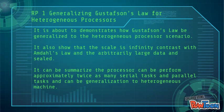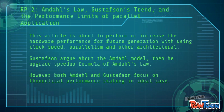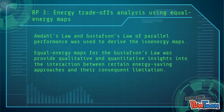This article is about increasing hardware performance for future generations using clock speed, parallelism, and other architectural approaches. Gustafson argues about the Amdahl model, then upgrades the speed-up formula of Amdahl's Law. However, both Amdahl and Gustafson focus on theoretical performance scaling in ideal cases. Amdahl's Law and Gustafson's Law of Parallel Performance were used to derive ISO energy maps, providing qualitative and quantitative insights into the interaction between energy-saving approaches and their consequent limitations.